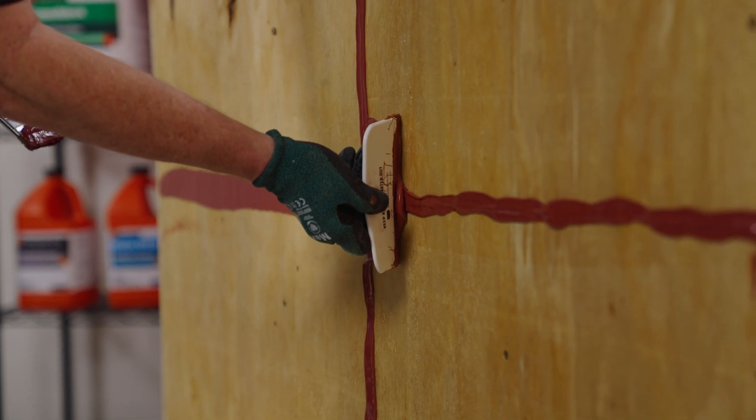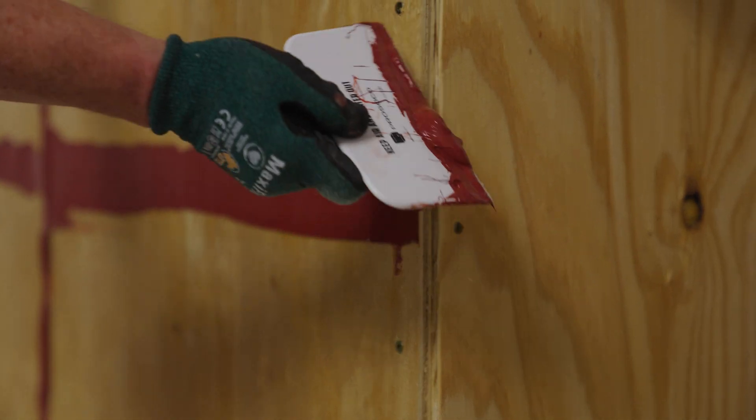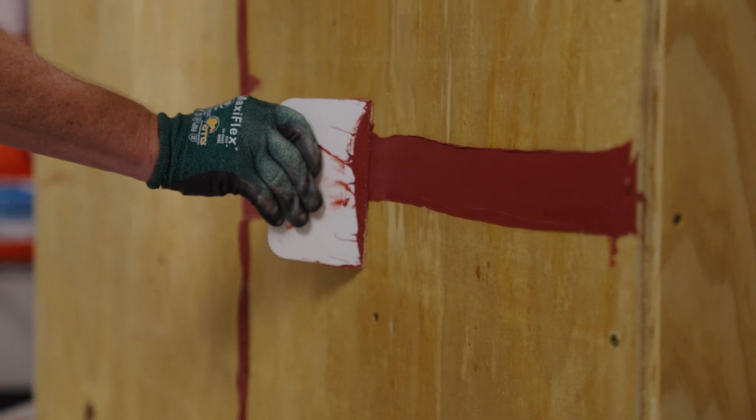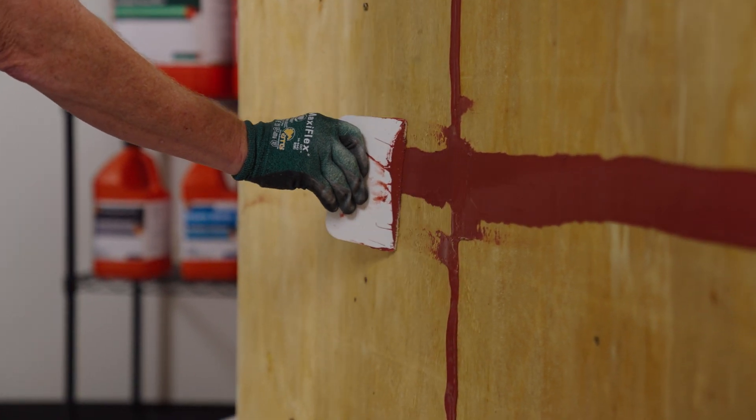The Bondo knife is a nice, simple, low-cost tool. When you strike it, you'll have excess material on the knife that you can use on nail heads, screw heads, or any board deficiencies.